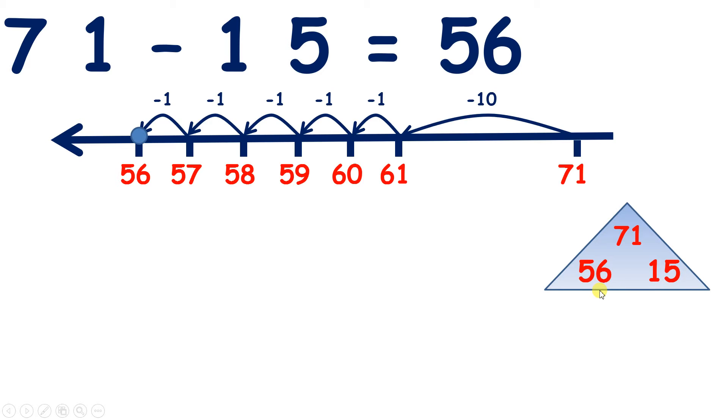Now if we're going to check using the inverse operation we need to check using addition. So what addition question can we make from this triangle? Let's add the bottom numbers, 56 add 15. And what answer are we hoping for here? Well if our triangle is correct, so if the question we answered above is correct, we should get the answer 71.